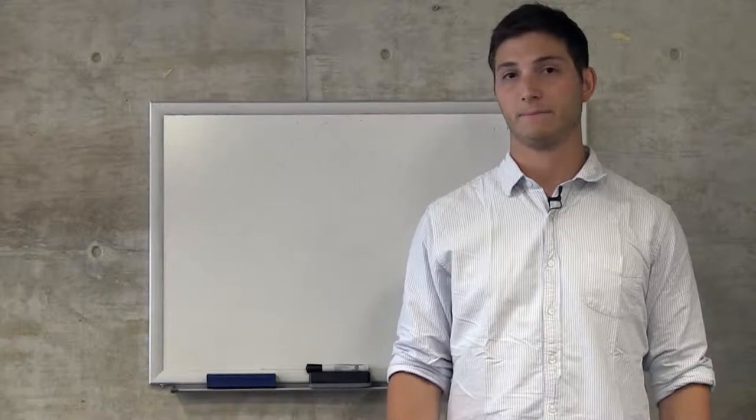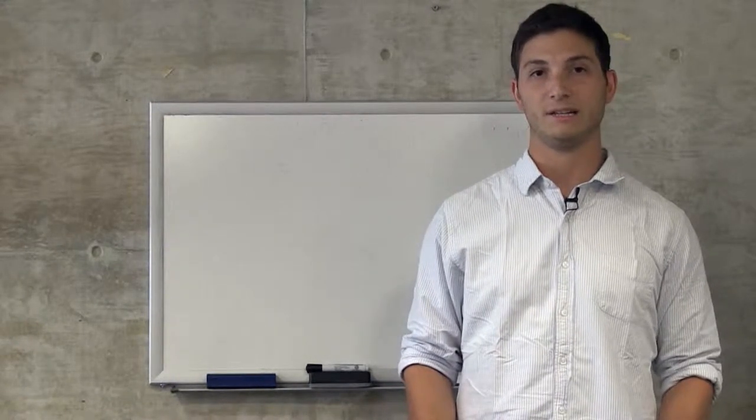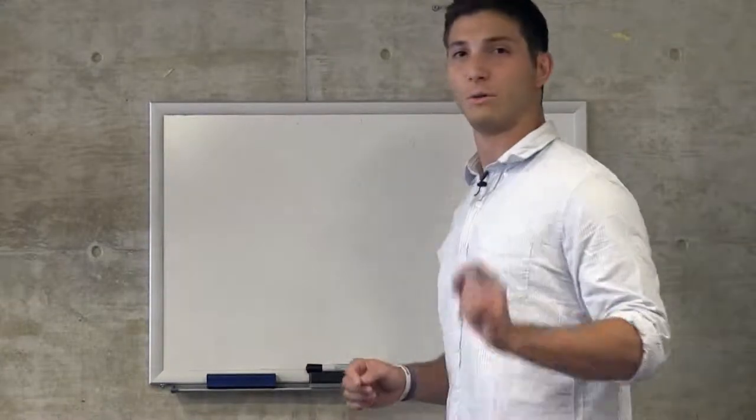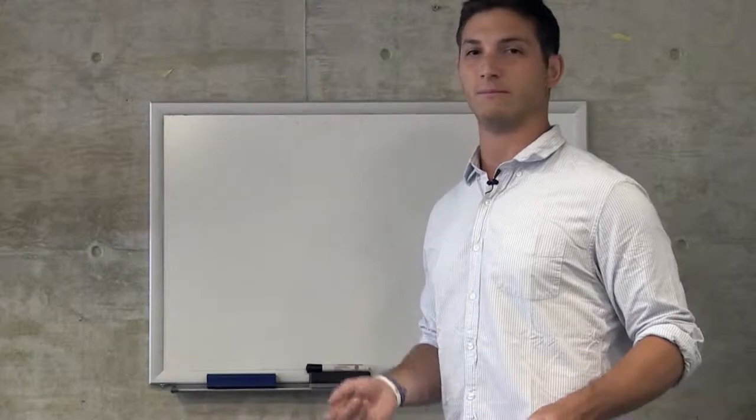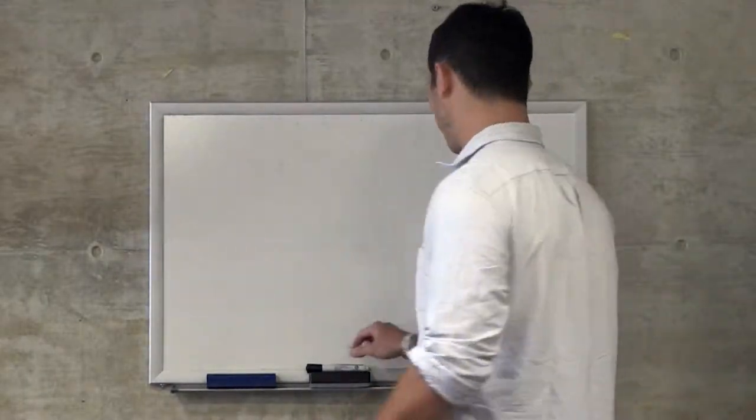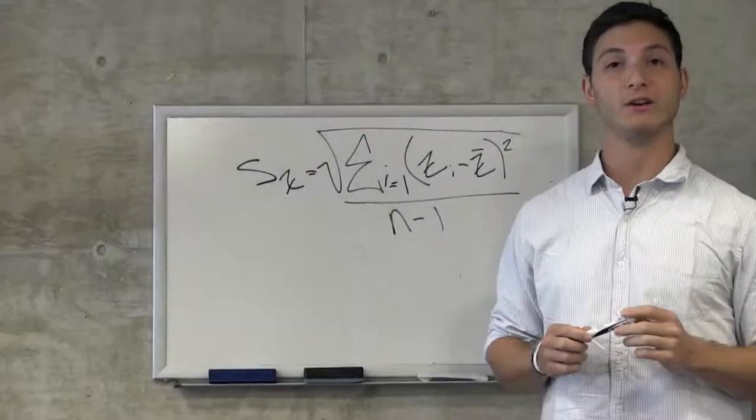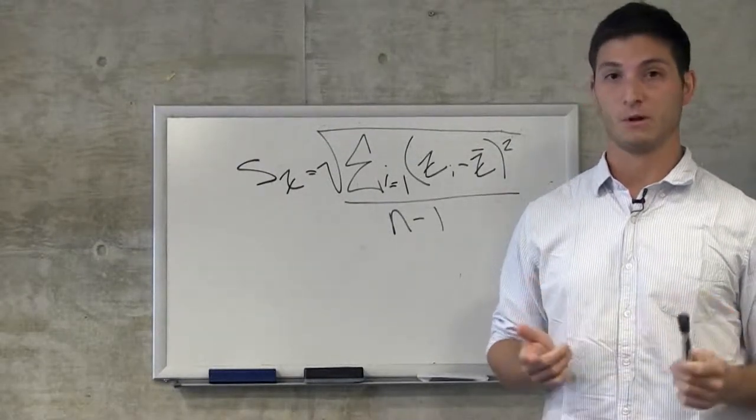So how do we measure variability? We can do this by calculating a mean with a standard deviation or SD. Don't worry, though. We're not going to expect you to calculate standard deviation by hand. Most statistical software tends to do this, but I'll write it on the board for you anyway. The important take-home message is that a larger standard deviation means that there's more variability than a smaller standard deviation.